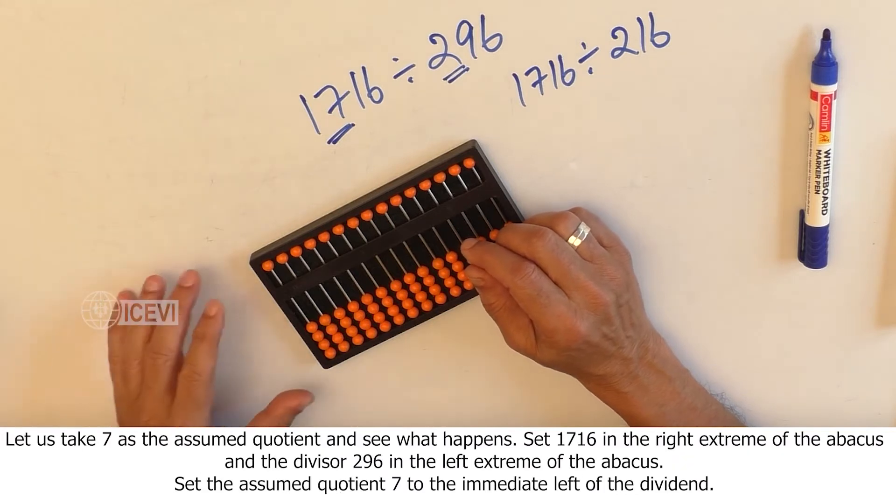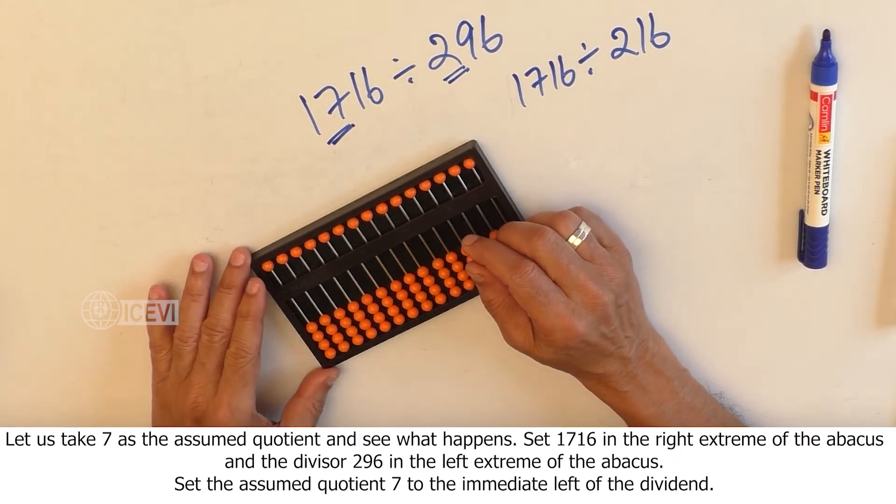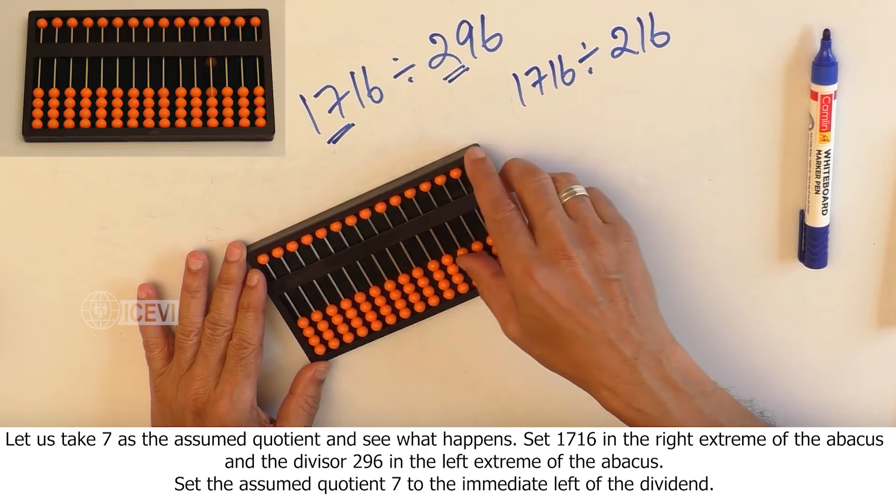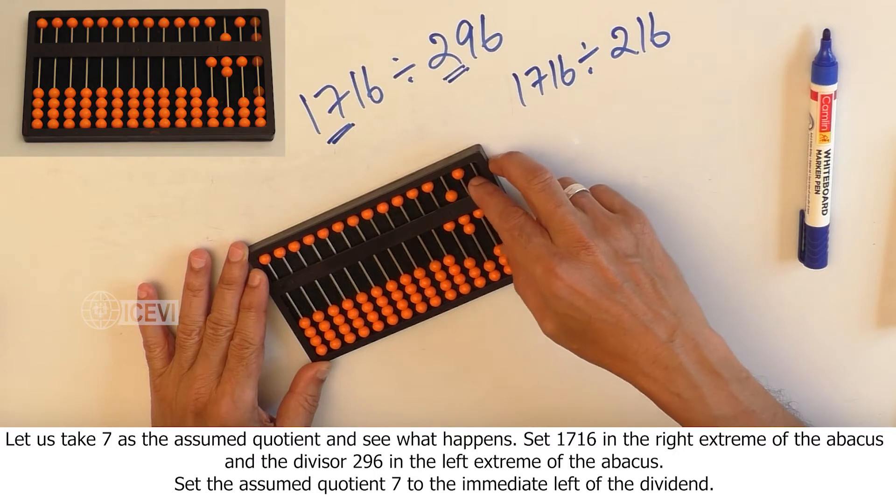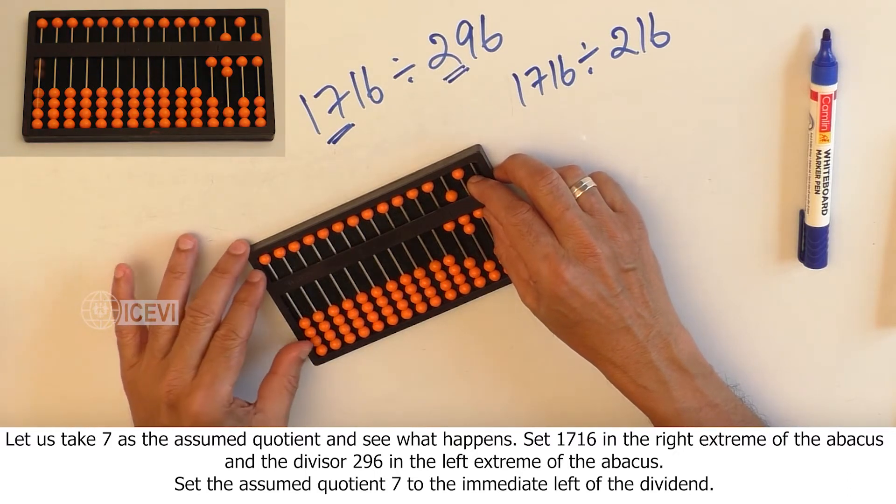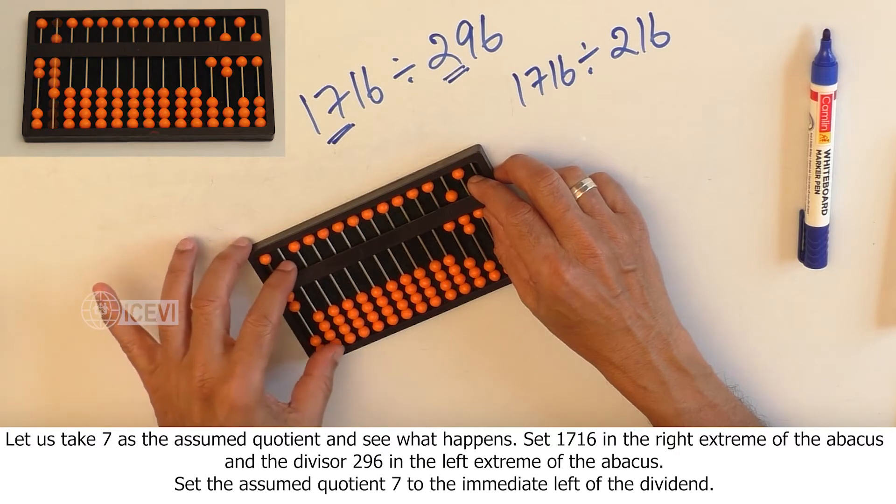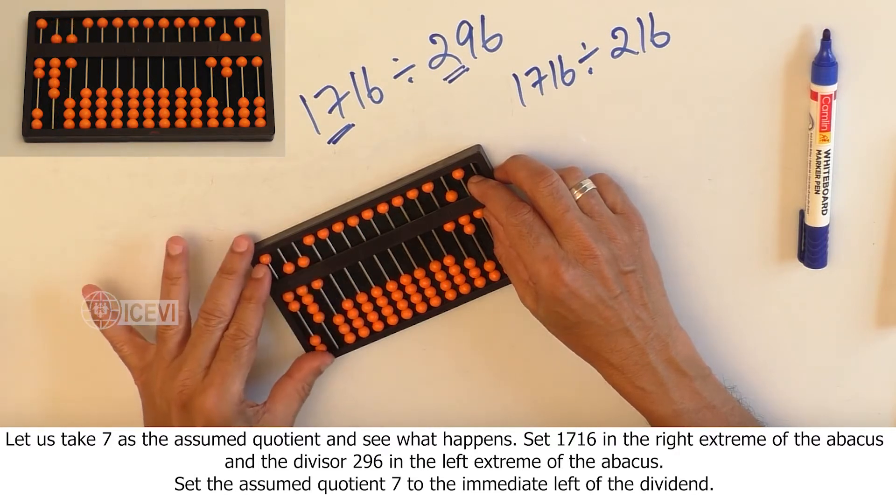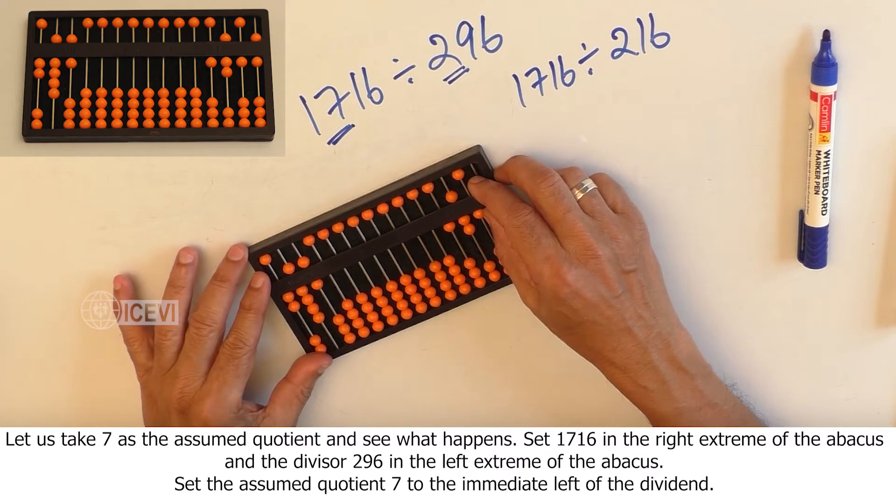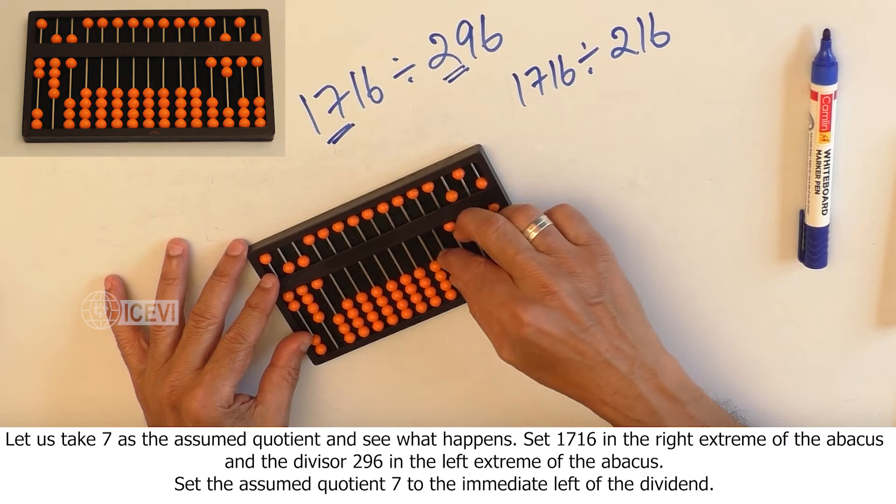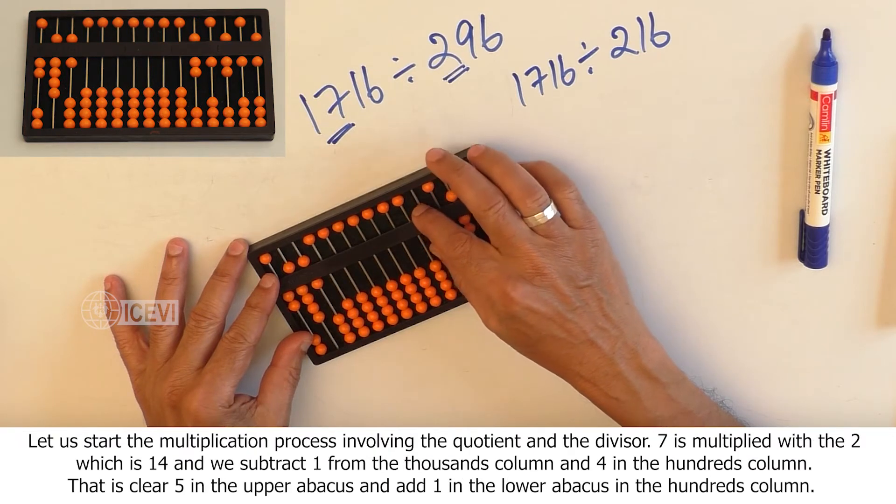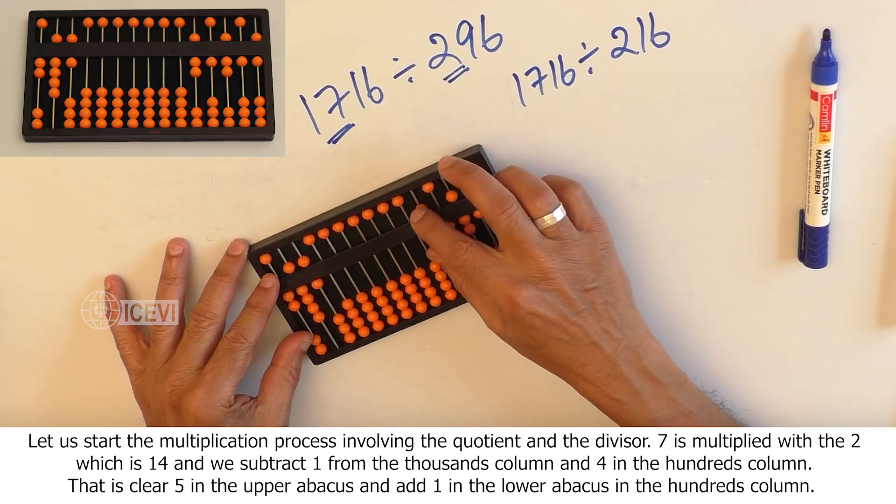Let us take 7 as the assumed quotient and see what happens. Set 1716 in the right extreme of the abacus and the divisor 296 in the left extreme of the abacus. Set the assumed quotient 7 to the immediate left of the dividend. Let us start the multiplication process involving the quotient and the divisor.